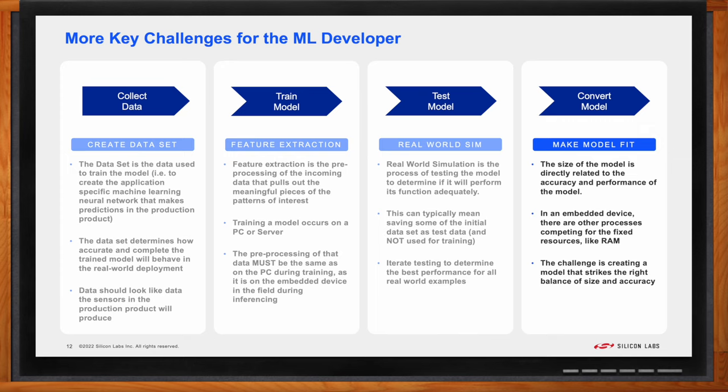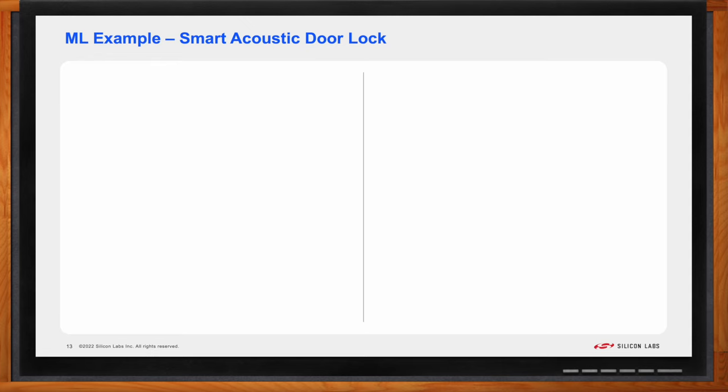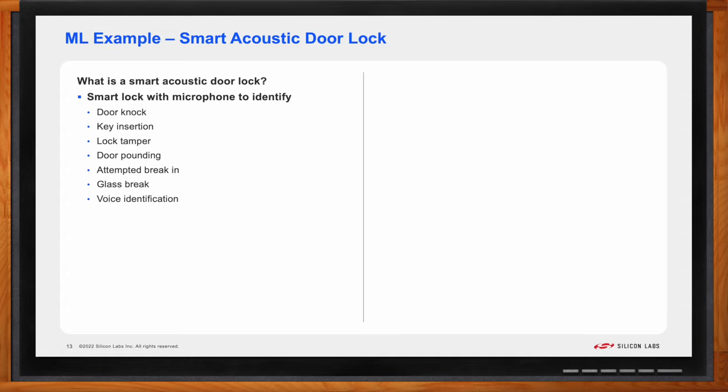That's cool, Dan. Can you give us an example of this in the real world? I'd love to explain a really good example of how machine learning could be used at the tiny edge. Consider a door lock. We see smart door locks on the market now. Ones that are connected with Bluetooth or Wi-Fi and can be opened up from an app or even a voice assistant. However, what about the idea of adding value by adding an acoustically aware door lock? What would this look like?